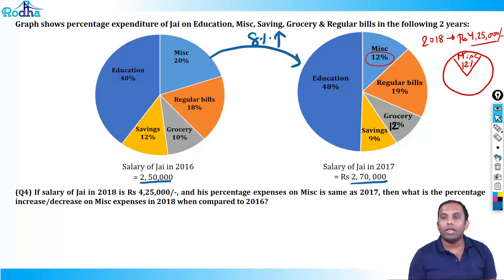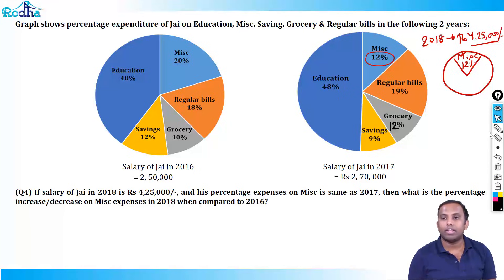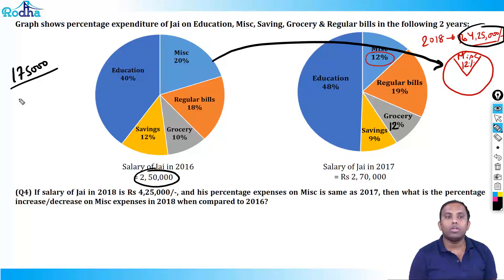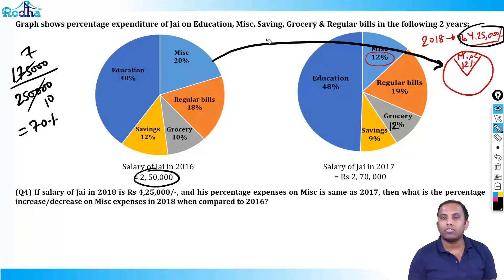Now I have to compare directly from 2016 to 2018. From 2,50,000 to 4,25,000, what is the percentage change? Change of 1,75,000 on 2,50,000 — that is 7 by 10 = 70%. So from 2,50,000 to 4,25,000 is a 70% increase.